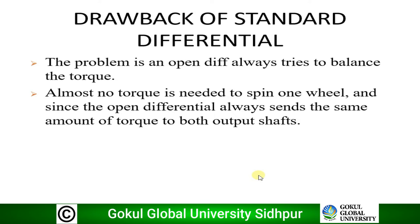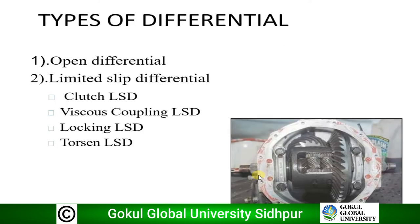Drawbacks of standard differential: an open differential always tries to balance the torque. Almost no torque is needed to spin one wheel, and since the open differential always sends the same amount of torque to both output shafts, if one wheel requires no torque, the open differential still sends the same amount of torque to both shafts. To overcome this drawback, a modification is made called the limited slip differential. There are two types: open differential, which we discussed, and limited slip differential.